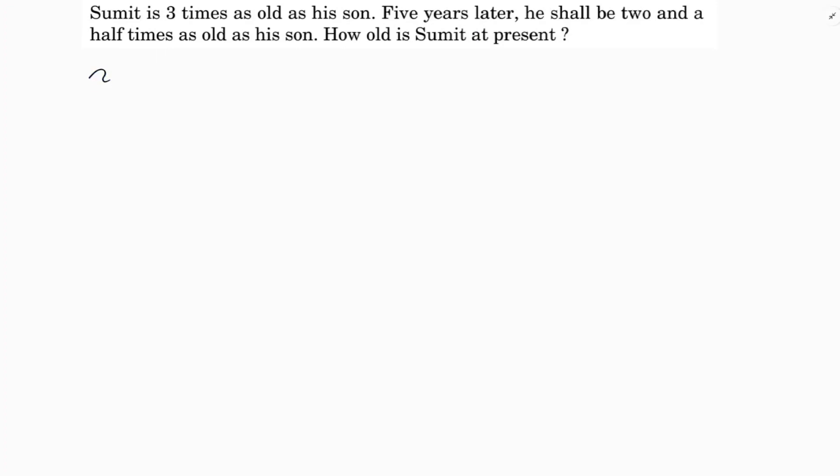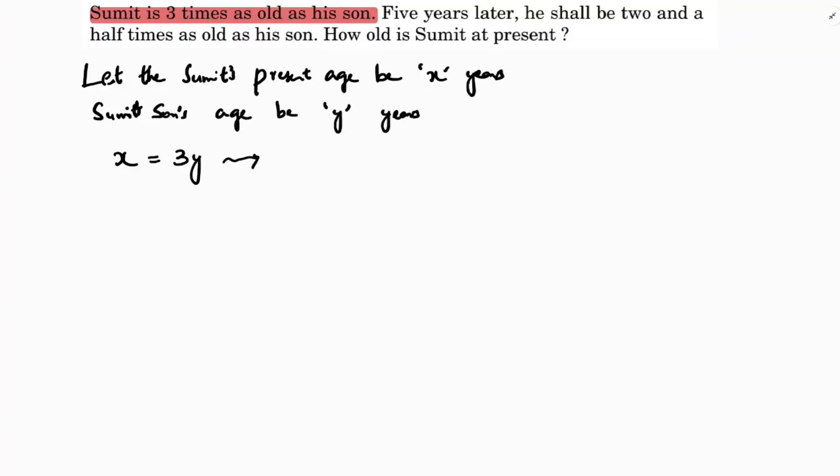Let the Sumit's present age be X years and his son's age be Y years. According to the first line, Sumit is three times as old as his son. So if you write the equation, X equals 3Y. This is equation one.